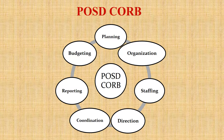Luther Gulick explains the scope of public administration through the English letters POSDCORB, which expands to P for Planning, O for Organization, S for Staffing, D for Direction, C for Coordination, R for Reporting, and B for Budgeting.